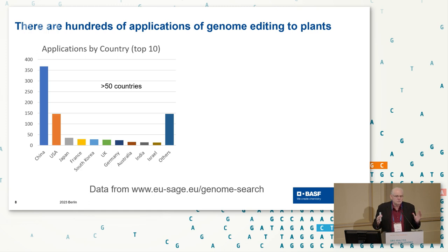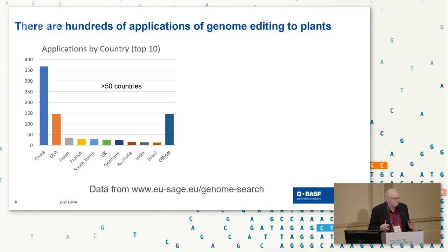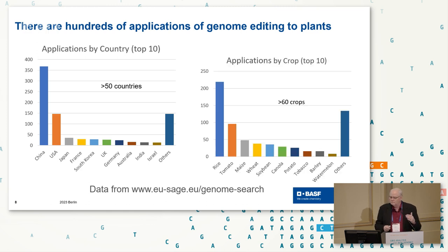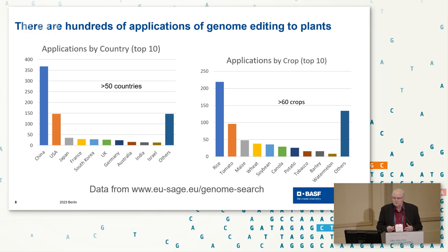I'm not going to talk just about CRISPR — CRISPR is not the only gene editing tool. The SAGE database, which was mentioned yesterday, shows that there are more than 50 countries involved — this is just the top 10 — and there are 60 crops and more than 400 applications mentioned. So there is a lot of it out there.